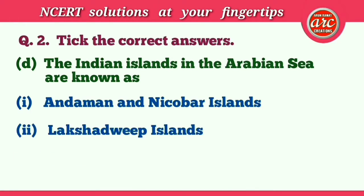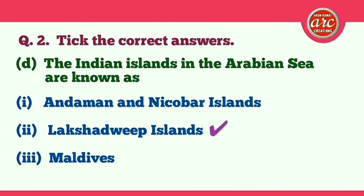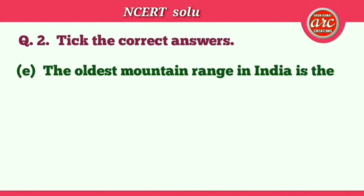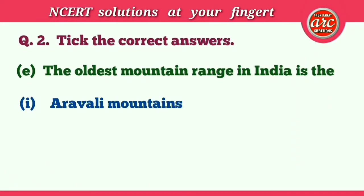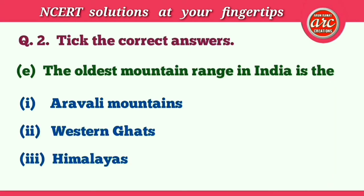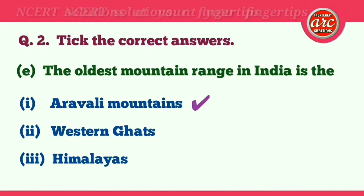The correct answer for (d) is number two — Lakshadweep Islands. (e) The oldest mountain range in India is: (1) Aravalli mountains, (2) Western Ghats, (3) Himalayas. The correct answer is number one — Aravalli mountains.